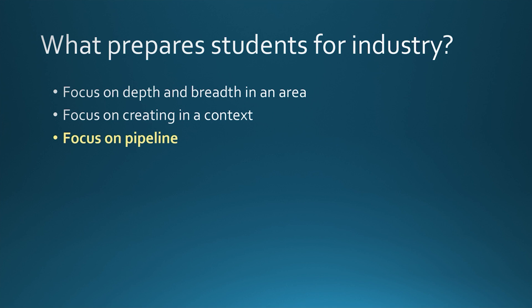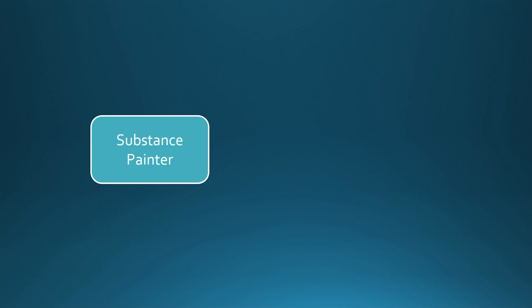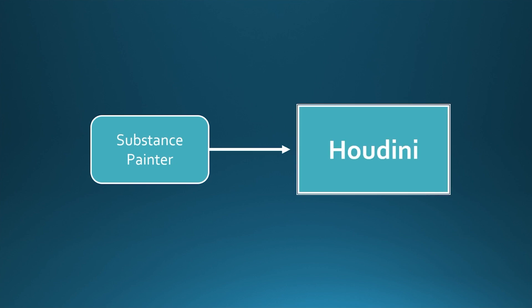Another thing that we do to prepare students for industry is really focus on pipeline. When Substance Painter started becoming more popular, we adopted it, and it worked really great. But we had a lot of studios tell us Substance is great, but can students really work with it in a production setting — not just show off what they've created in Substance, but bring it back into another software. Houdini allowed them to do this. Houdini let us take these things further with the students to see how these different softwares come together in context, and when we're working on our senior productions, that becomes even more complex.